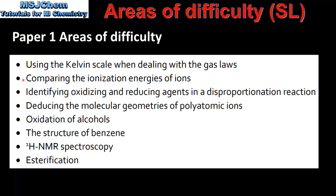Next we have comparing the ionization energies of ions. Next we have identifying oxidizing and reducing agents in a disproportionation reaction. A disproportionation reaction is one where one species gets both oxidized and reduced.